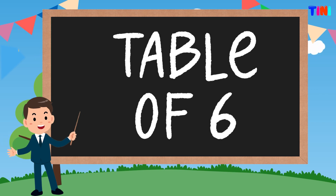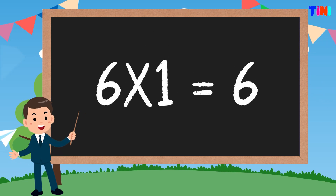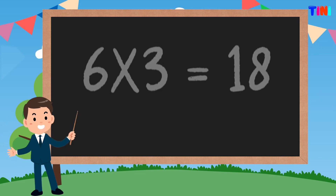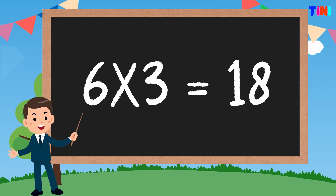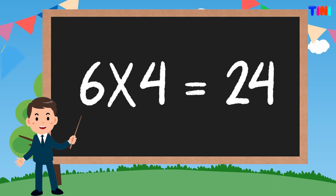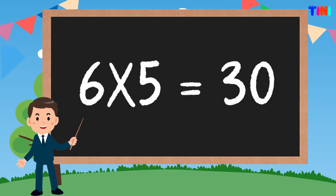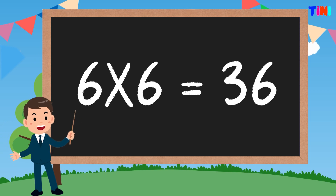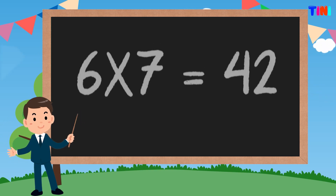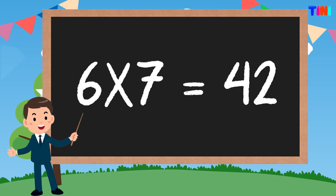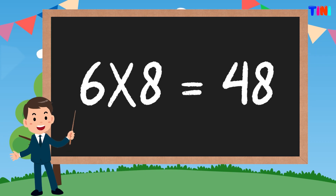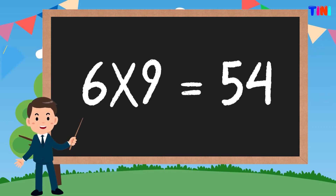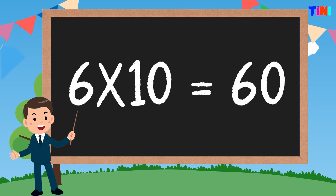Table of six. 6 ones are 6. 6 twos are 12. 6 threes are 18. 6 fours are 24. 6 fives are 30. 6 sixes are 36. 6 sevens are 42. 6 eights are 48. 6 nines are 54. 6 tens are 60.